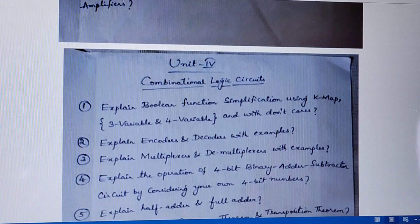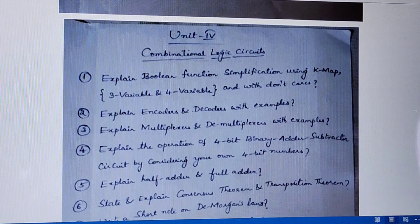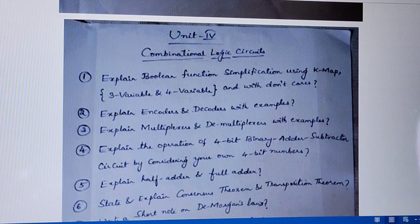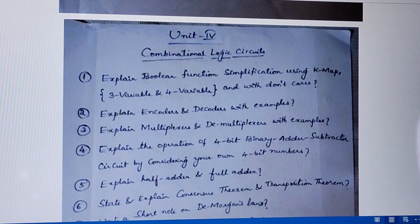Coming to unit 4, that is combinational logic circuits. Explain the Boolean function simplification using KMAP. Three-variable and four-variable are very important; with and without don't care conditions you have to study. They may also ask you to reduce a given expression using laws, so you have to remember all the laws and postulates involved in this chapter.